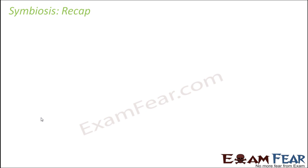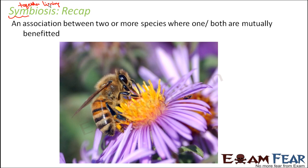Let us do a quick recap of the process of symbiosis. So what is symbiosis? The word 'syn' means together, 'bio' means life — so together living. When two organisms live together for their mutual benefit, that association is known as symbiosis. It is an association between two or more species where one or both are mutually benefited.